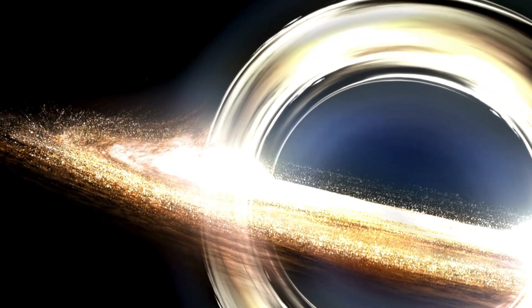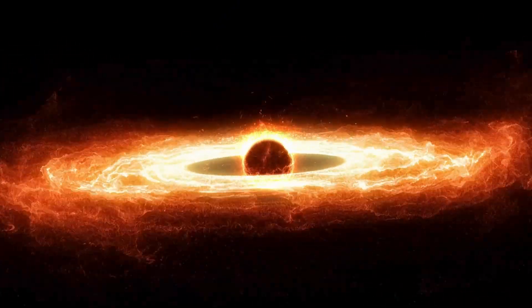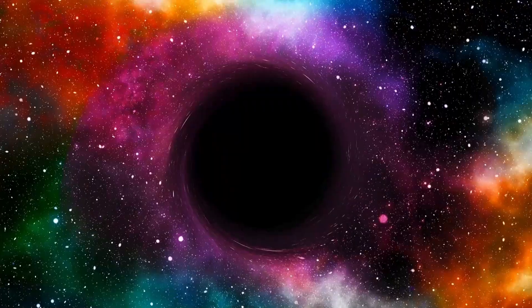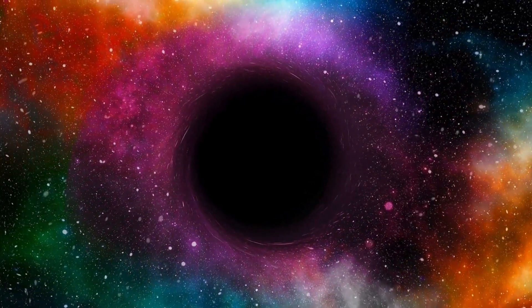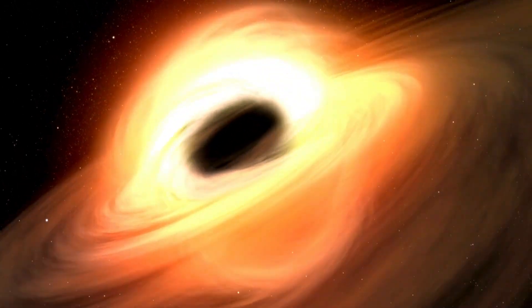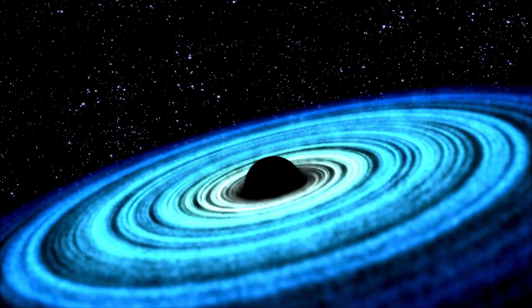The most well-known ideas about dark holes were predicted by Einstein's theory of general relativity. Essentially, when a gigantic star dies, it abandons a dense core. If this core's mass is several times that of the sun, gravity overwhelms everything, leading to the formation of a dark hole.